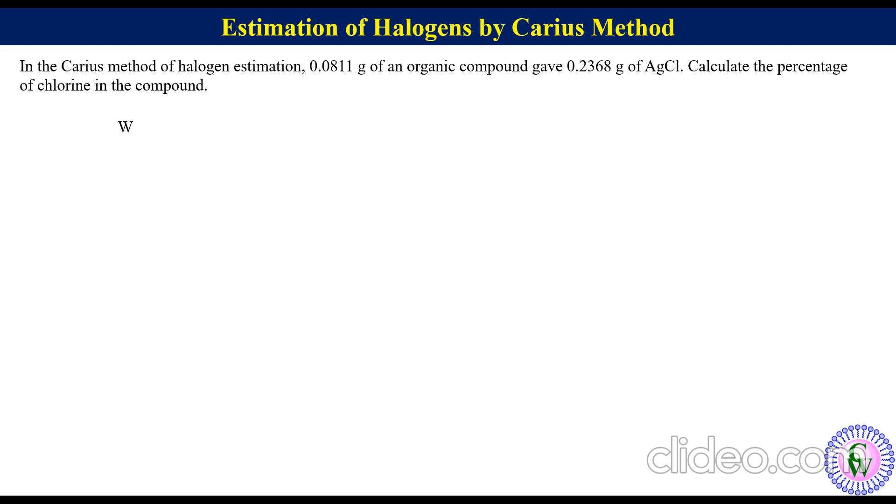Given that mass of sample capital W is equal to 0.0811 gram. Mass of AgCl is equal to 0.2368 gram. We know that percentage of chlorine is equal to molar mass of chlorine times small w times 100 upon molar mass of AgCl times capital W. Molar mass of chlorine and AgCl is 35.5 and 143.5 respectively.